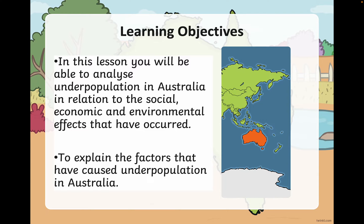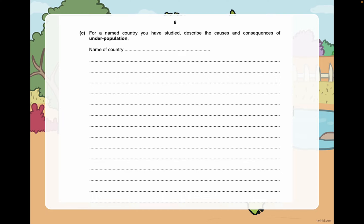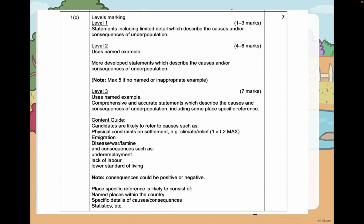By the end of this session you'll be able to explain the different factors that have caused underpopulation in Australia. Looking at past paper resources from June 2021, Paper 1-2, the question asks for the causes and consequences of underpopulation. Looking at the mark scheme, we want to be focusing on Level 3, which means making sure your statements are comprehensive, and like other population case studies, include place-specific references.